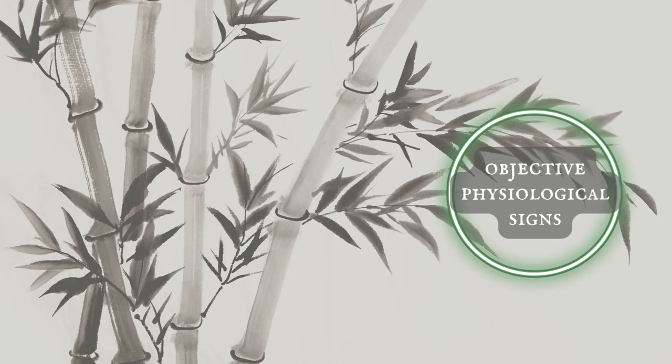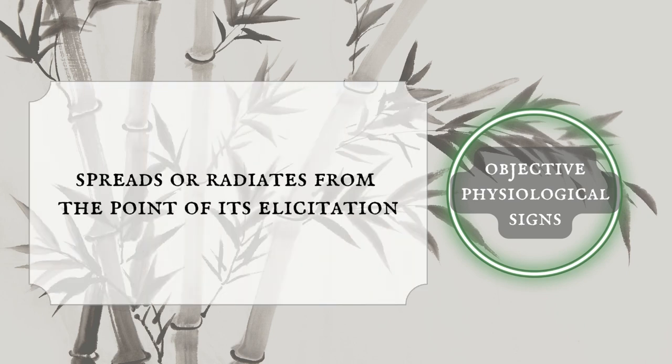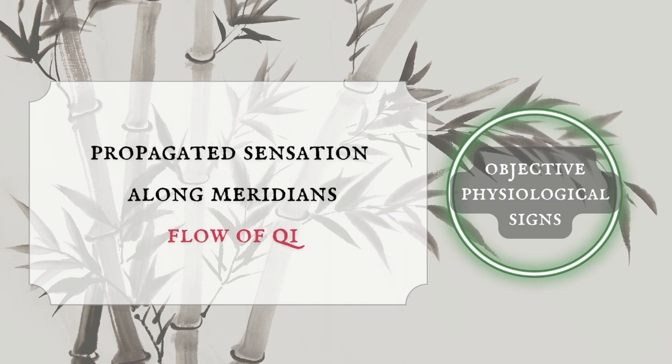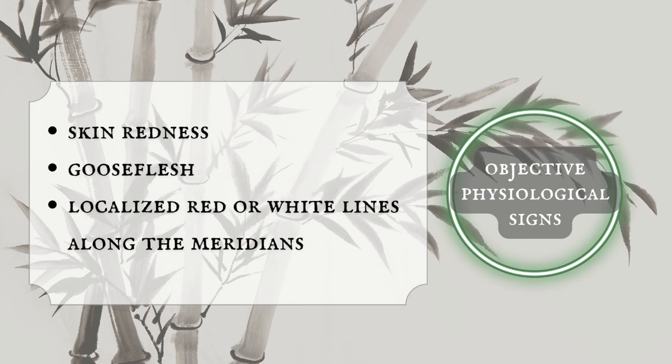Finally, objective physiological signs due to acupuncture treatment. Another important feature of De Qi is that it often spreads and radiates from the point of its elicitation, which is called propagated sensation along meridians, or the flow of Qi. Sometimes it may manifest as skin redness, goose flesh, or localized redness, or white lines along the meridians of the body surface.